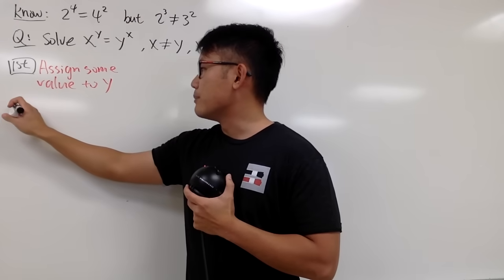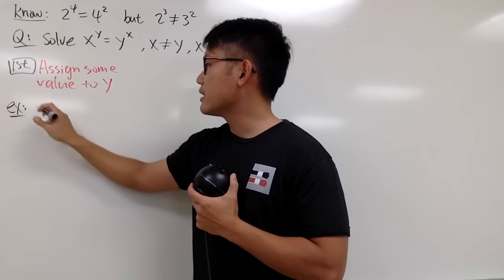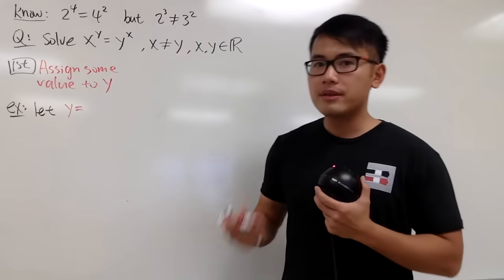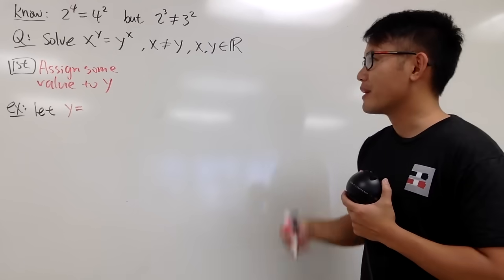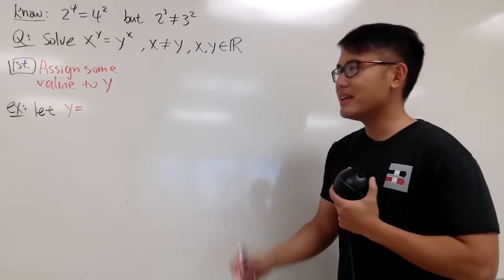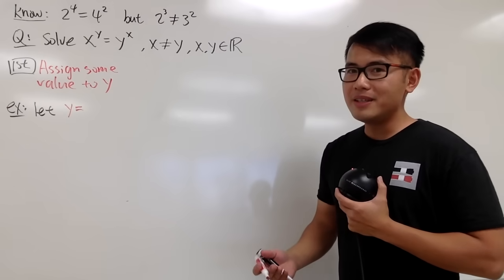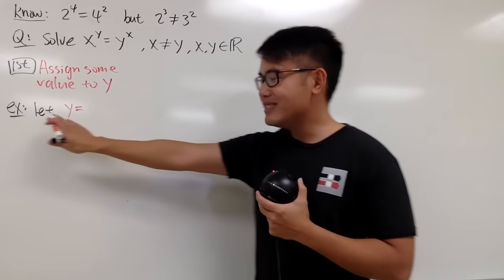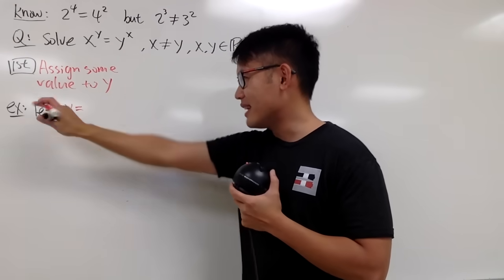And let me just demonstrate with an example. Let's just say that y equal to some nice numbers. You can pick 5, you can pick 7, you can pick maybe 1 half or things like that. I don't guarantee the resulting equation is solvable or not, but just a nice example right here.